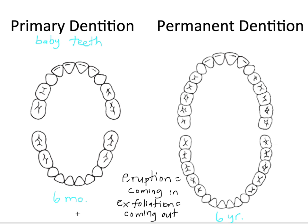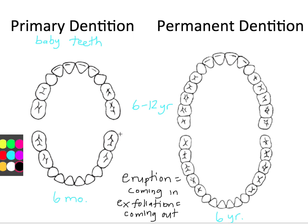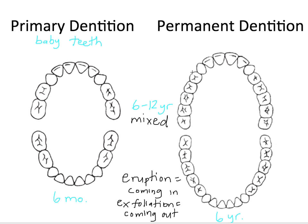So again: around six months we start to get eruption of the primary teeth. By six years, we're starting to get eruption of the permanent teeth. It takes until about 12 years for the last baby teeth to be exfoliated and completely replaced by permanent teeth. This transition period from about six to about twelve years old is called the mixed dentition — when we have a mix of both primary teeth and permanent teeth.